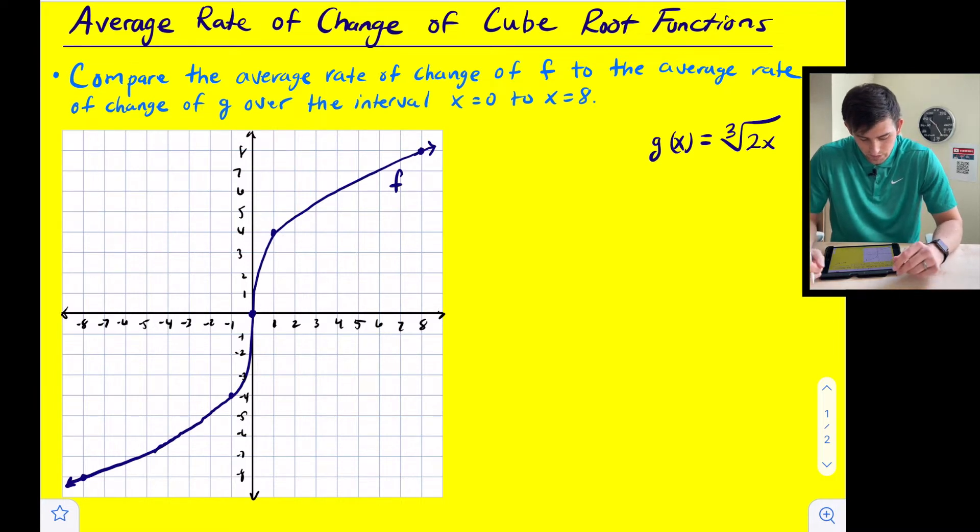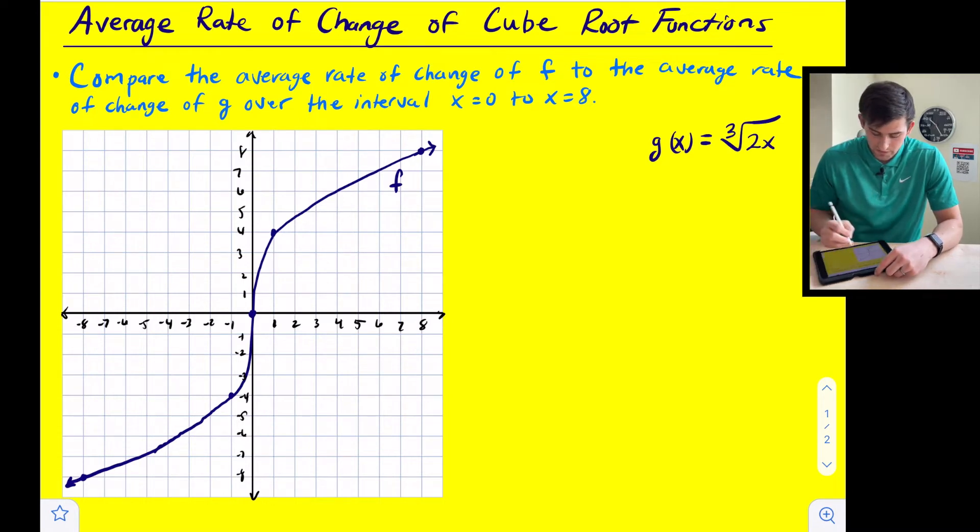So that's what it tells us here in blue. Compare the average rate of change of F, which is our graph on the left, to the average rate of change of G, which is our equation on the right, over the interval x equals 0 to x equals 8.